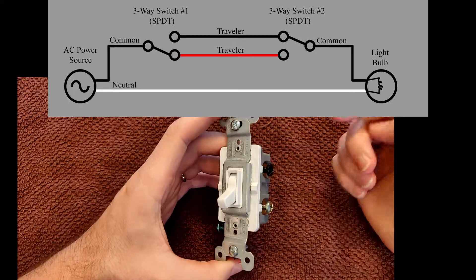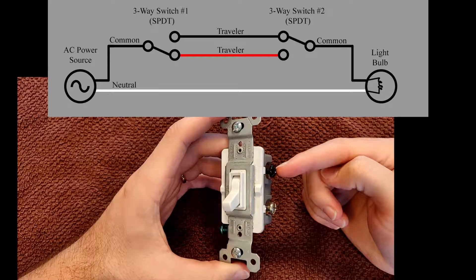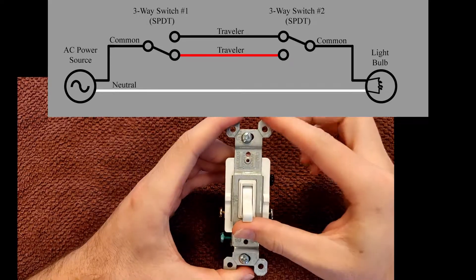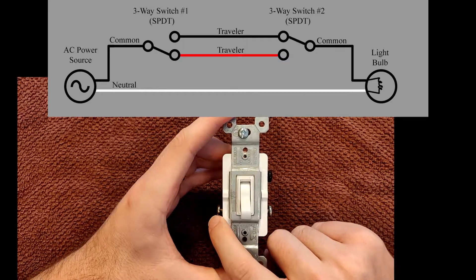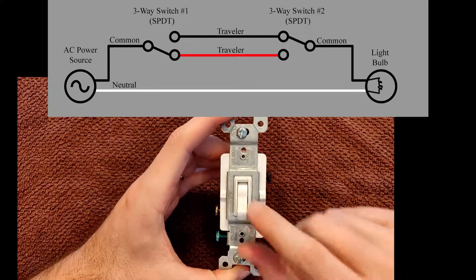The way this works is power comes into the common screw. Then depending on which way the switch is flipped, that determines whether this hot or this hot gets the power.